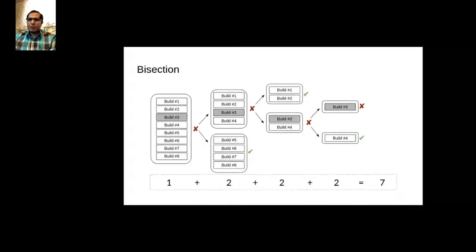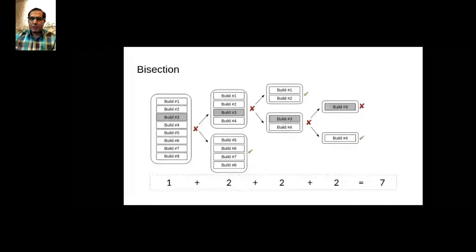But what if there is a failure? For example, if build number three has failed, we do bisection — splitting into the first half (builds one through four) and the second half, then bisecting again and again until we can isolate the culprit. We need seven build executions to isolate it, which is actually good because without batching and bisection we needed eight.